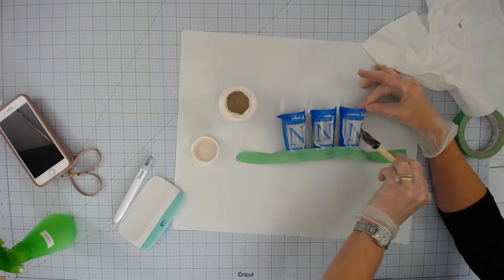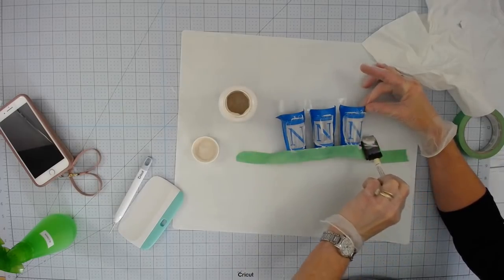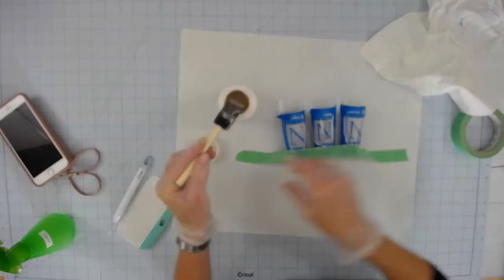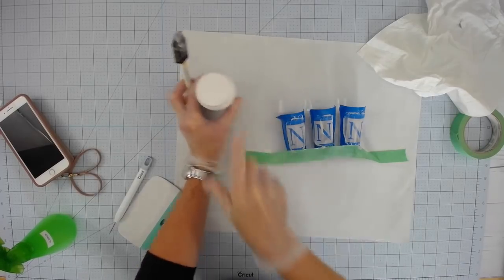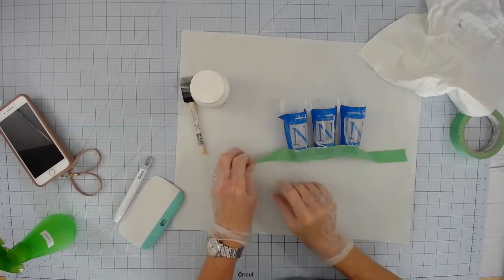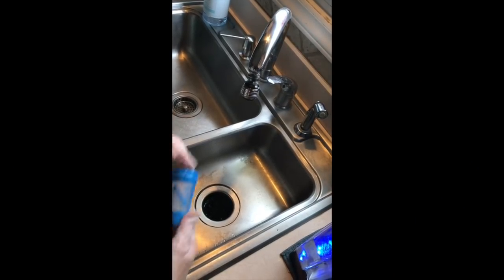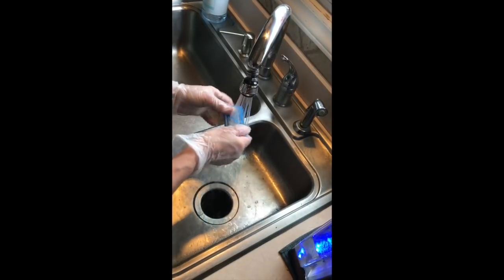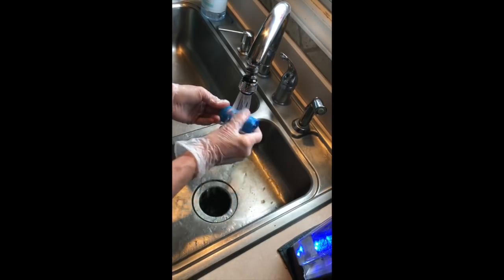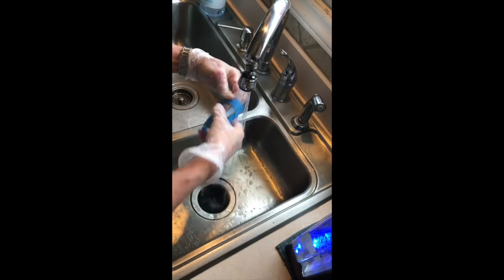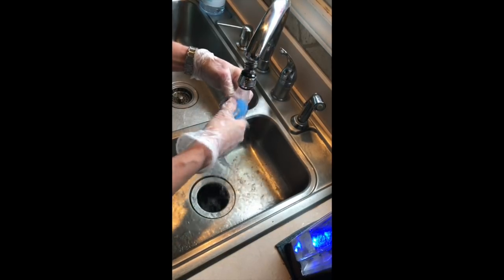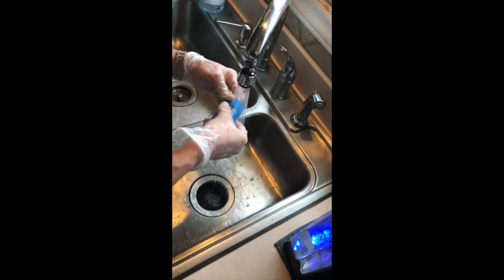Once you have the excess wiped off, you're going to take it over to your sink and rinse it. Make sure you put that lid back on the Armor Etch. So you can see I've just taken this to the kitchen sink. I'm leaving my gloves on. I'm leaving the vinyl on and I'm just rubbing it with water and rinsing the Armor Etch off. And you're going to do that to each one.